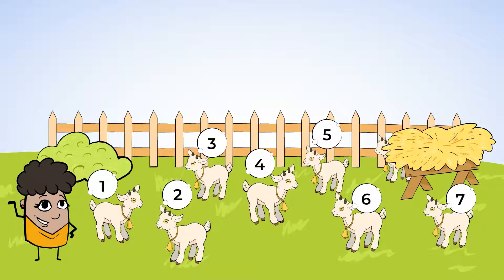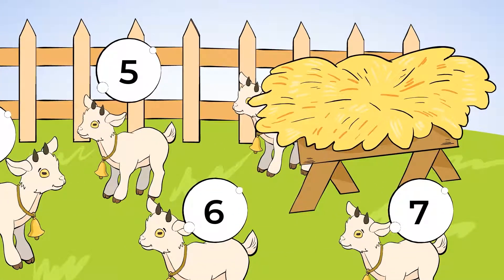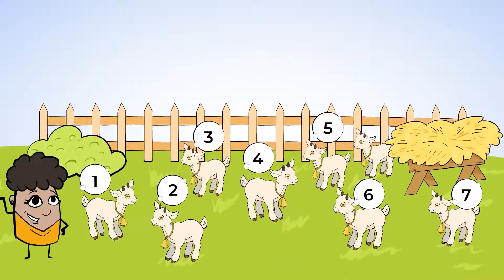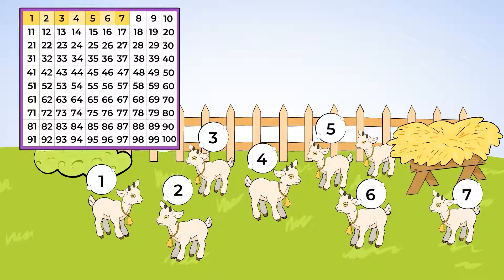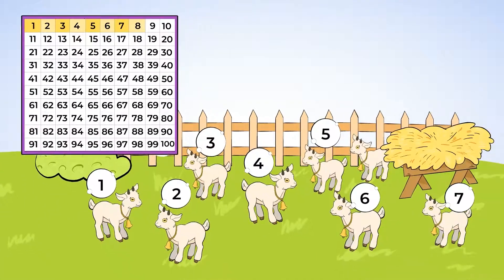But I wonder if there are any hiding just like with the piglets. Get closer, look around. Aha, there it is. One more. The last goat was eating some grass out of sight. Now let's take a look at the hundreds chart. We already counted seven goats and after seven comes the number eight.